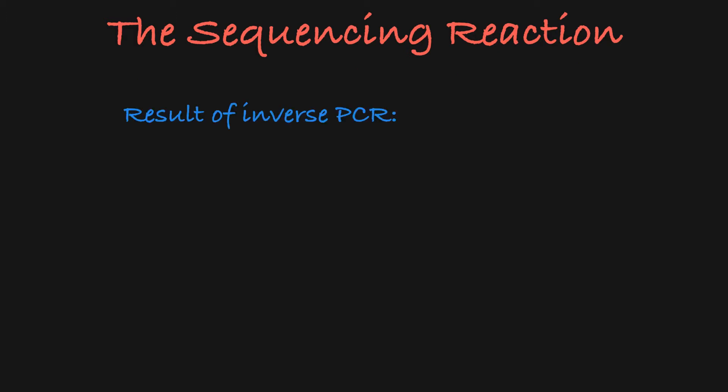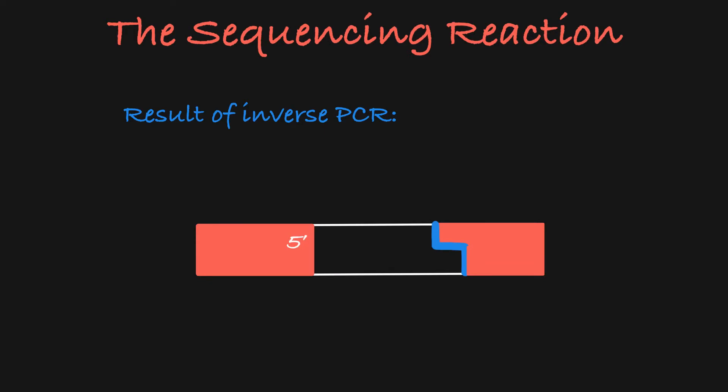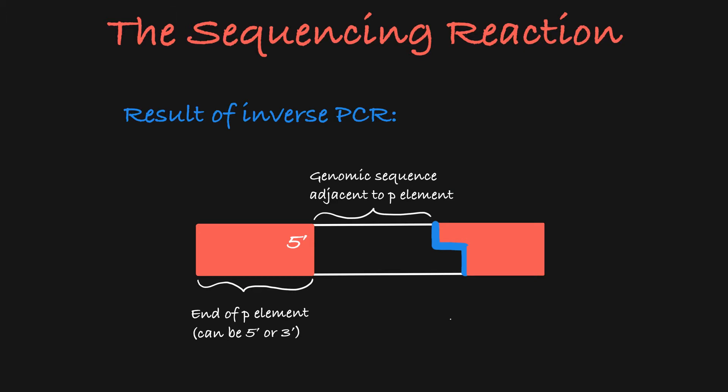The result of inverse PCR was many copies of this segment of DNA. The segment includes the end of your P element, followed by the adjacent genomic sequence, followed by the restriction site used in the digestion step of inverse PCR, followed by the central P element DNA.